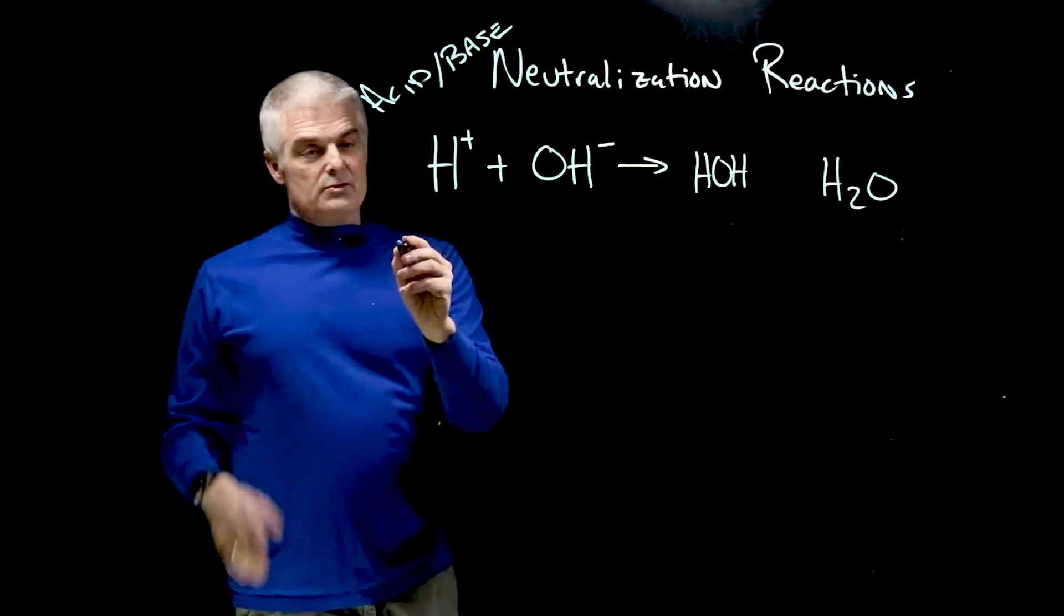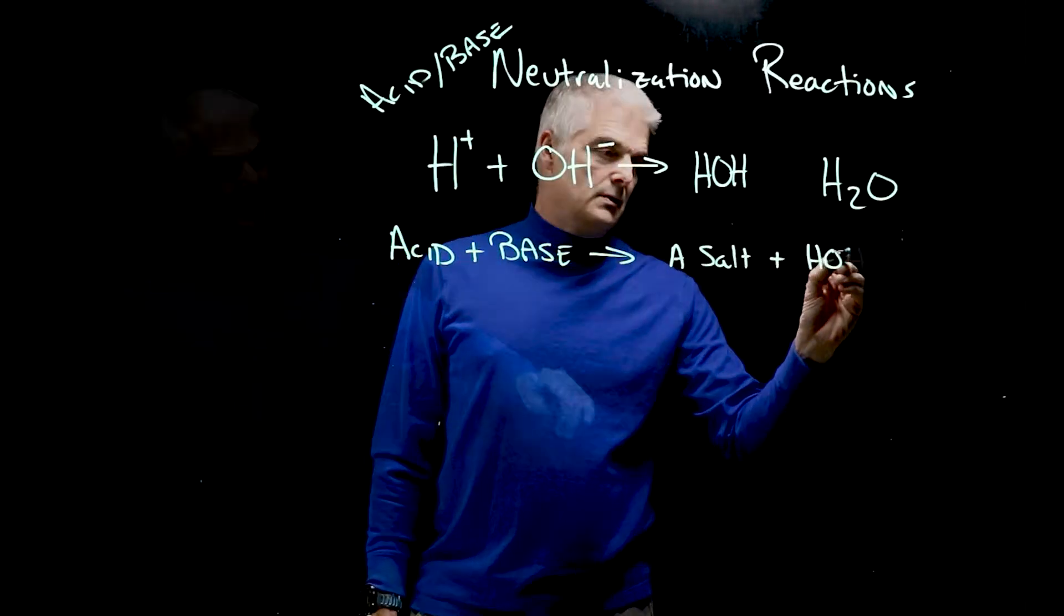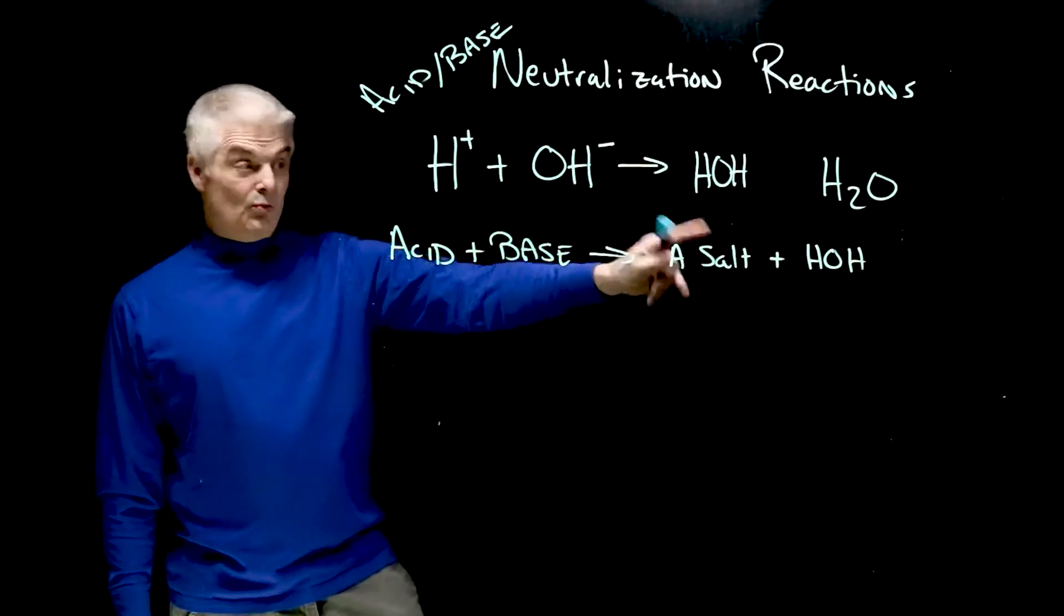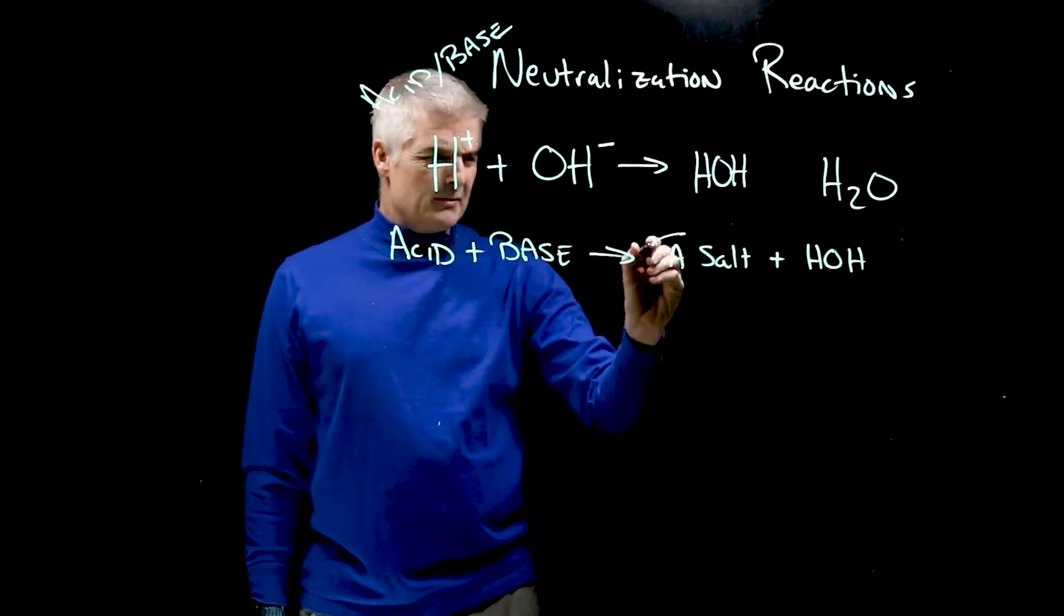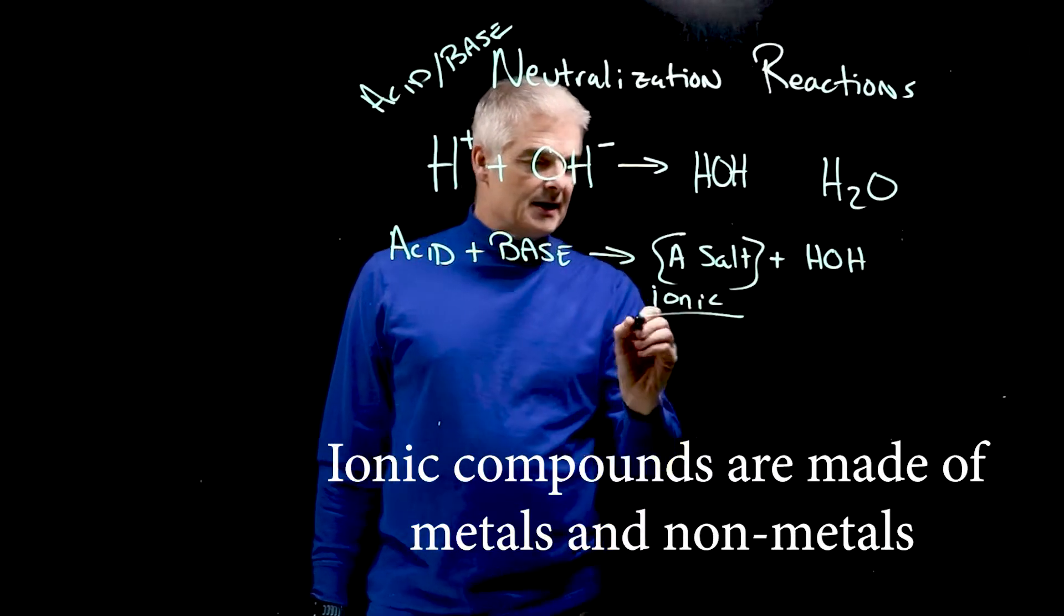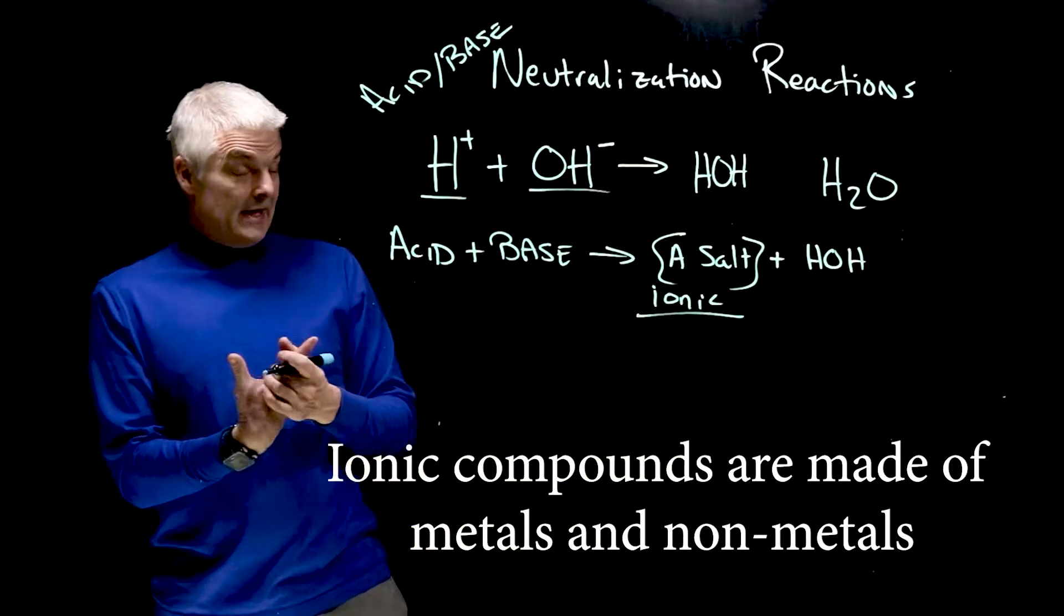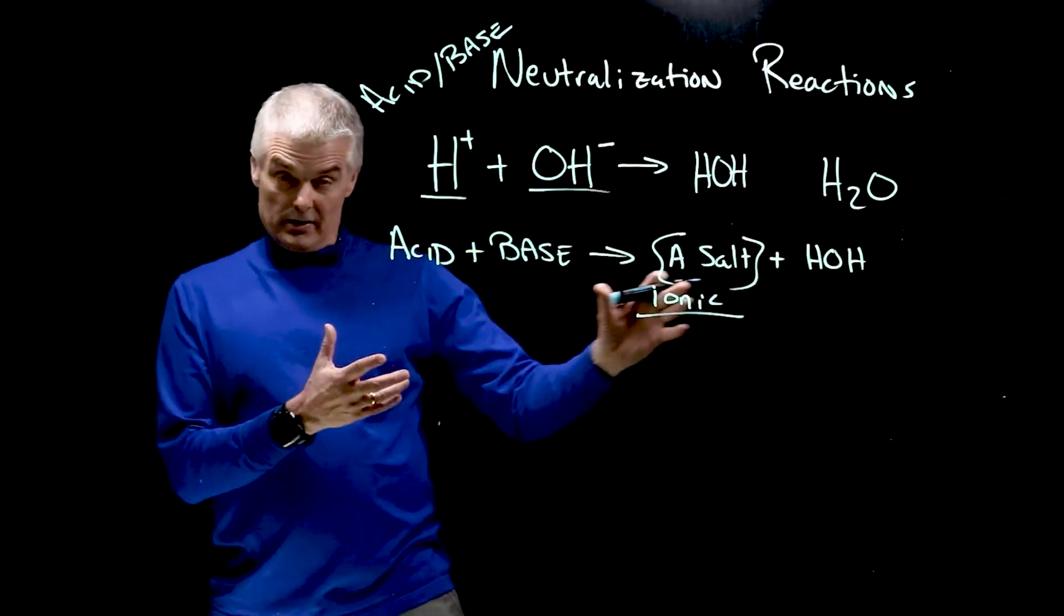Now, there's a general rule. An acid plus a base makes a salt and water. A salt? What do I mean by a salt? A salt would be some kind of ionic compound, because these H's and OH's are already connected with somebody else. So if that's the case, you're going to make a salt and water.